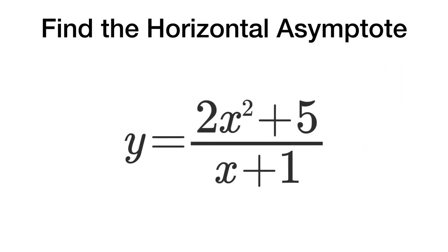Alright, let's try another one. In this case, if you look, my top degree is 2, my bottom degree is 1. That means bigger on top, bigger on top, none.